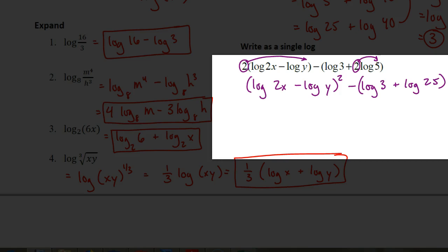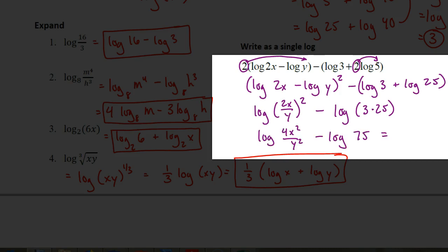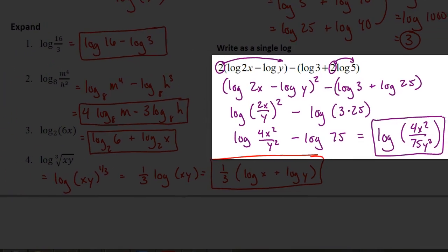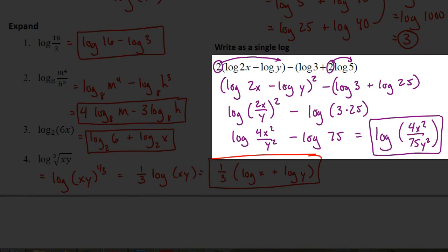Now, working inside each set of parentheses: log of 2x minus log of y becomes log of 2x divided by y, quantity squared. The second set combines using multiplication. Squaring the first gives 4x squared over y squared, and 3 times 25 is 75. Now I still have two logarithms. The minus means I'm going to divide by 75. Dividing by 75 is the same as multiplying by 1 over 75, so we'd write the expression as 4x squared over 75y squared.